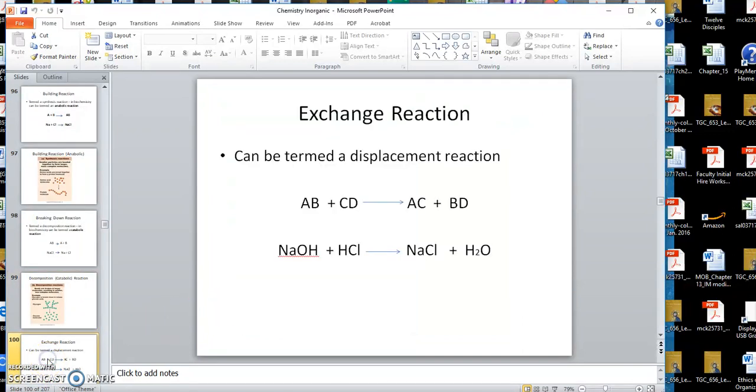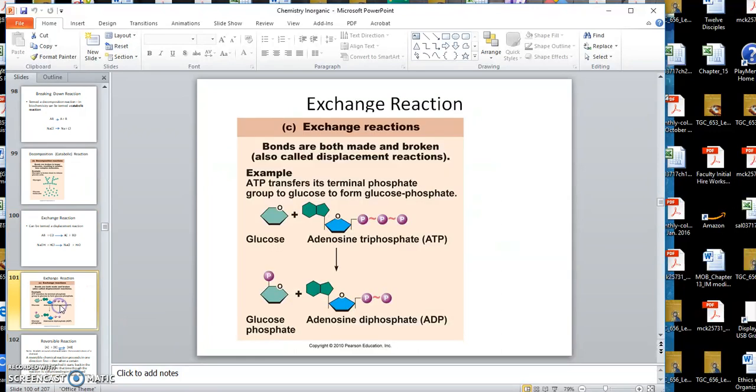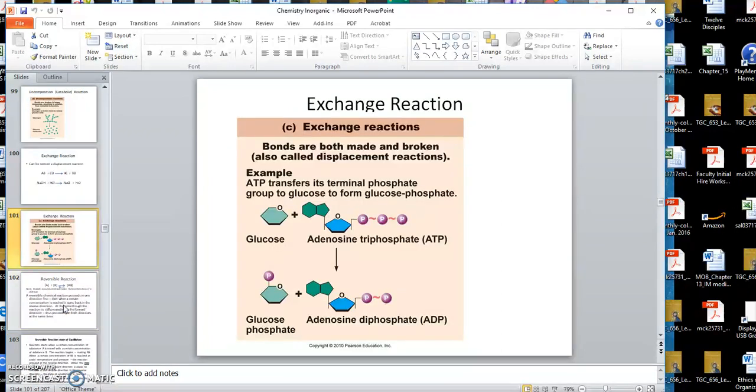An exchange reaction would be like this. A plus BC plus D, going to this here. So what's happening is they exchange partners. As I showed you a reaction, sodium hydroxide, which is a base combined with hydrochloric acid, could re-exchange its partners and come up with table salt and water. That's what we call an exchange reaction.